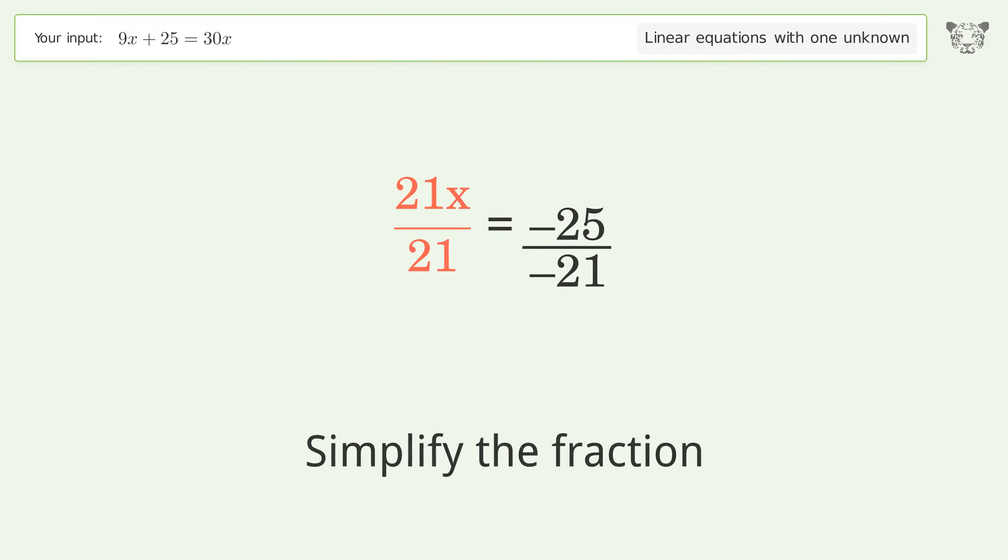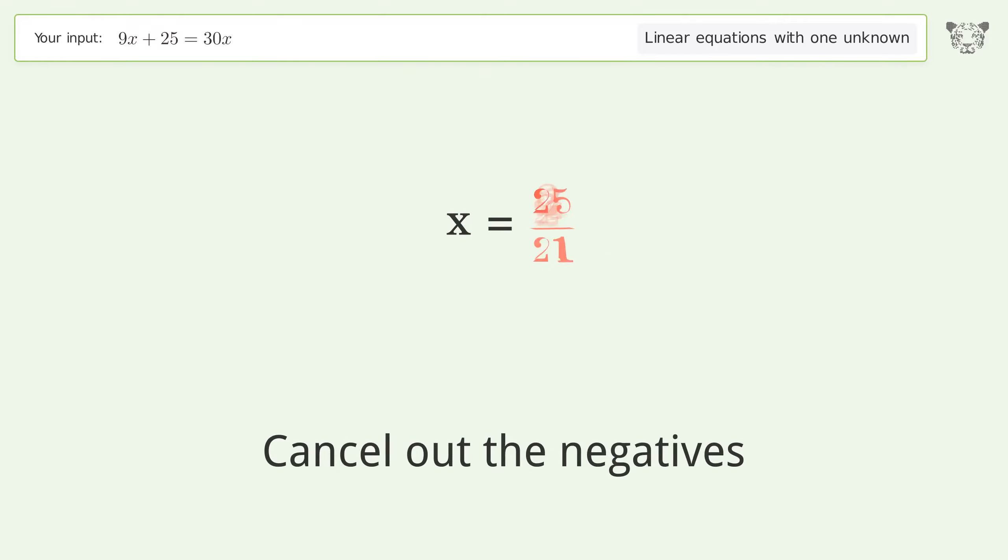Simplify the fraction. Cancel out the negatives. And so the final result is x equals 25 over 21.